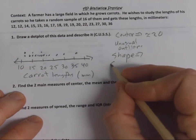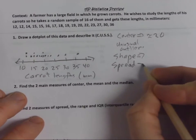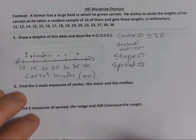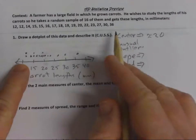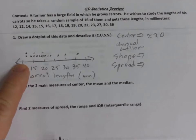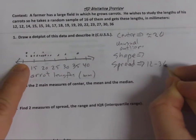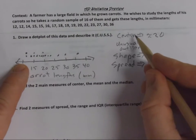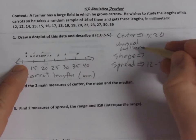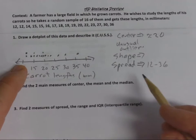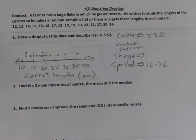The other thing you need to talk about is the spread. You could say the numbers vary from 12 to 36. That would be fully describing a distribution: its center, unusual values, shape, and spread. We'll be a little more definite about these.